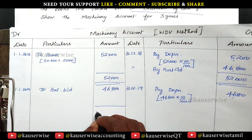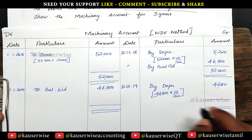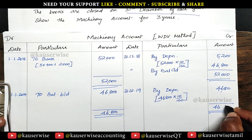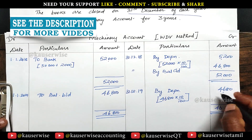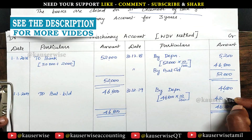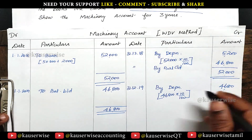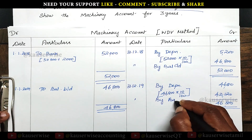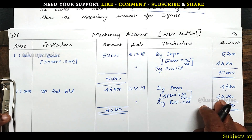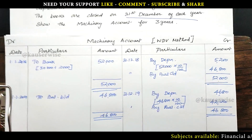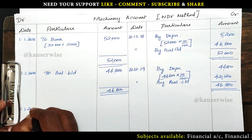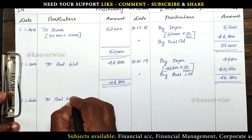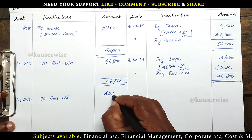Get the total. The balancing figure is 42,120. Same date — by balance carry down. And this will be the opening balance for the next year: on 1-1-2020, to balance brought down 42,120.